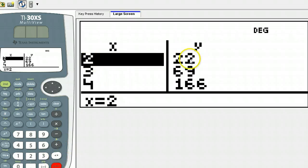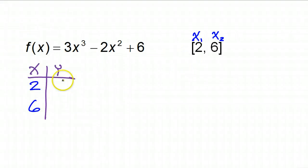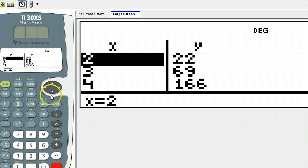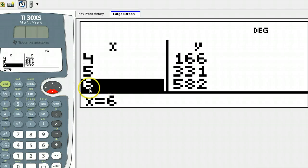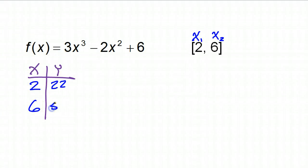Okay. So at 2, you have a y value of 22. Okay, how about 6? All right, we could just scroll down. At 6, we have a y value of 582. So 582.